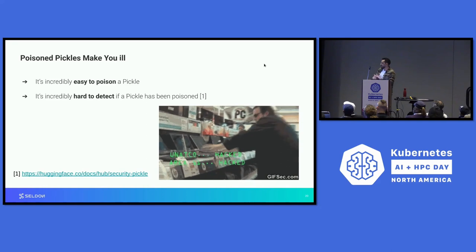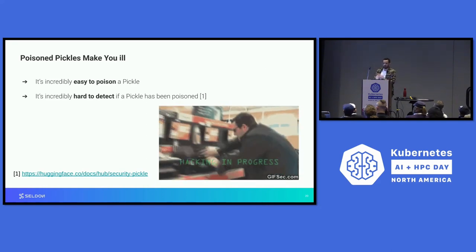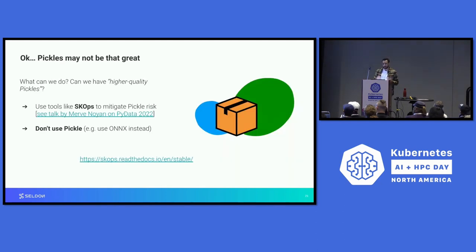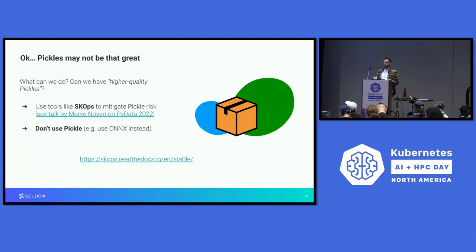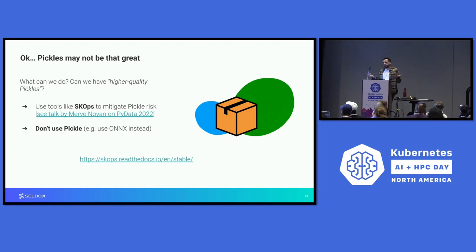Pickles may not be great. What we have seen is, on one hand, how easy it is to poison a pickle artifact, and on the other hand, how hard it is to detect that it has been poisoned. What do we do instead? One option is to generate higher quality pickles. We have tools like Scops that basically try to mitigate some of the risk introduced by pickle by removing from the generated artifact all the extra functionality that pickle provides that can cause trouble. It doesn't remove all of them though, because then tools like scikit-learn wouldn't work. Another option is to just not use pickle — use something like ONNX. ONNX is a more descriptive format to serialize machine learning models, which doesn't involve loading and running arbitrary code.